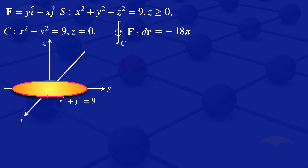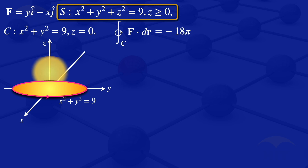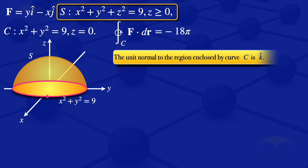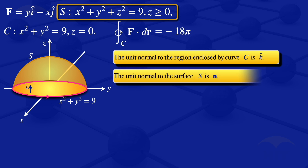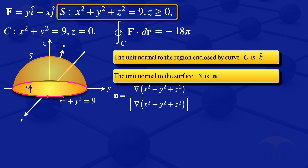We now look at the surface S: x² + y² + z² = 9. I sketch the hemisphere. The unit normal to the region enclosed by C — since C lies in the xy-plane — is the vector k. The unit normal to the surface S is called n, given by ∇(x² + y² + z²) divided by the norm of ∇(x² + y² + z²).